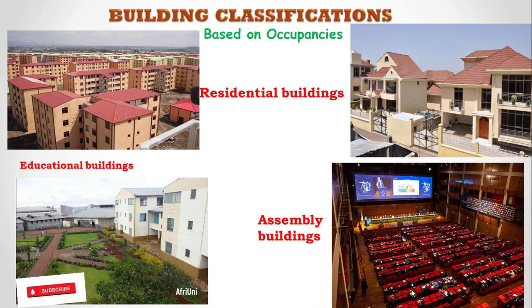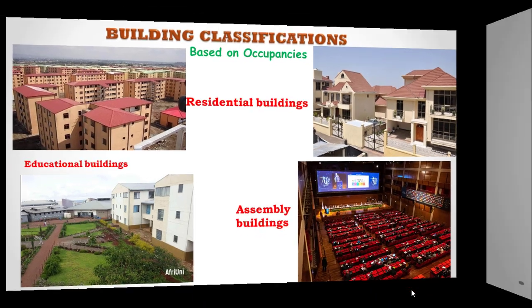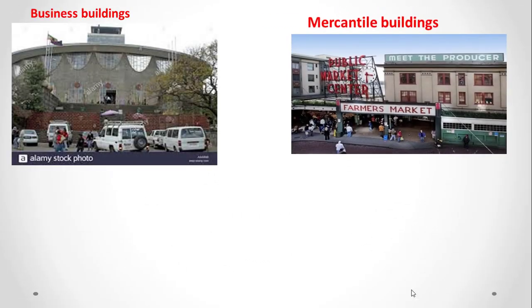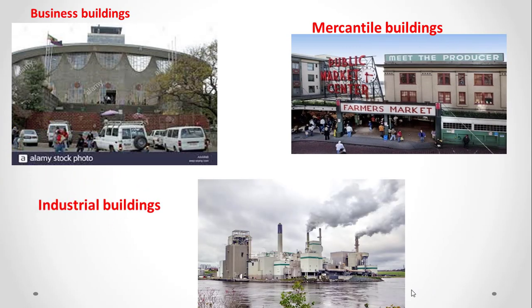Assembly buildings are used for political or religious purposes, or for venues like theaters, halls, village shops, and places of worship. We also have business buildings, which are used for transactional business purposes, such as banks, city halls, and courthouses.